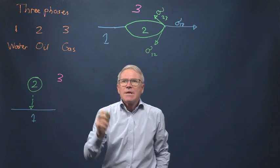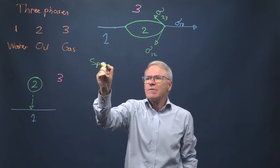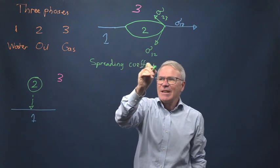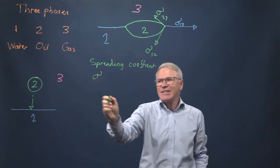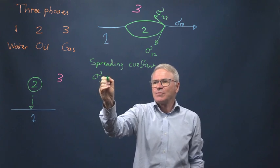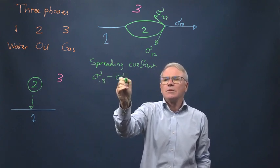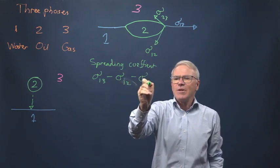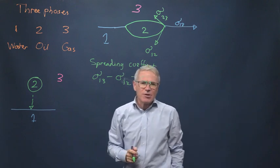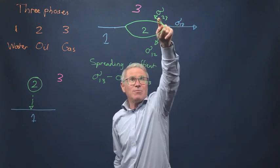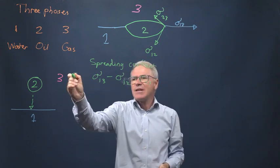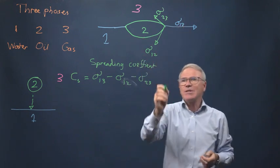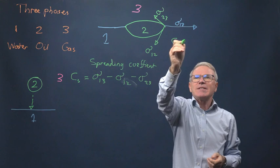Now let's define what I'm going to call a spreading coefficient. The spreading coefficient is sigma-1-3 minus sigma-1-2 minus sigma-2-3, and I'll call that Cs. In this case, in order for there to be a balance of forces, we have to have Cs less than zero.